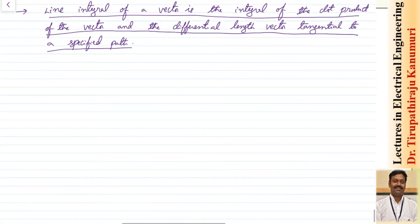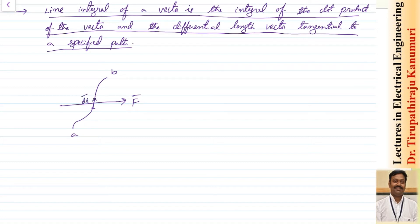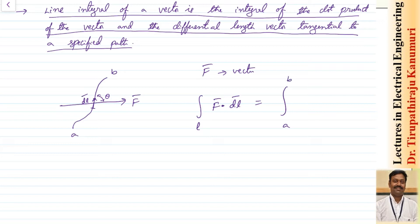Let us take some path and try to understand this. Let us assume a vector defined by f. I want to do the integration along some specified path, where the path is varying between a and b. We take the dot product between f and a differential length in the tangential direction of this path. Let us define this differential length as dl, which is making an angle theta with respect to f. So f is a vector and the path is from a to b, which I am defining by the line integral where l indicates the path.